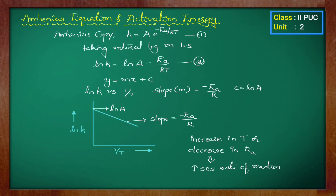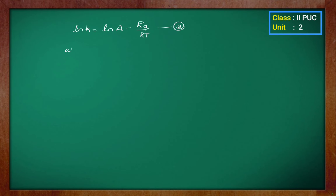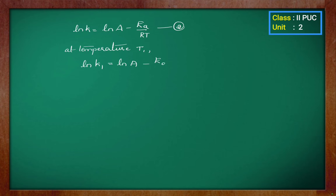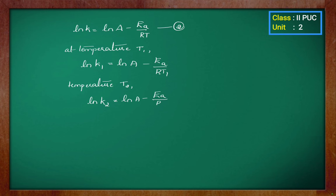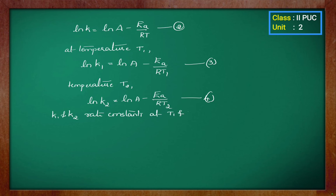And there will be an exponential increase in the rate constant. At temperature T1, we can write equation 2 as ln k1, where k1 is the rate constant at temperature T1, which is equal to ln A minus Ea divided by RT1. Similarly, we write ln k2 is equal to ln A minus Ea divided by RT2. Let me write these as equations 3 and 4, where k1 and k2 are rate constants at temperatures T1 and T2 respectively.